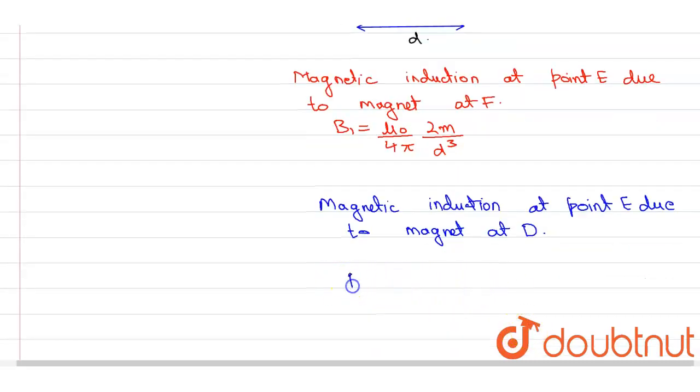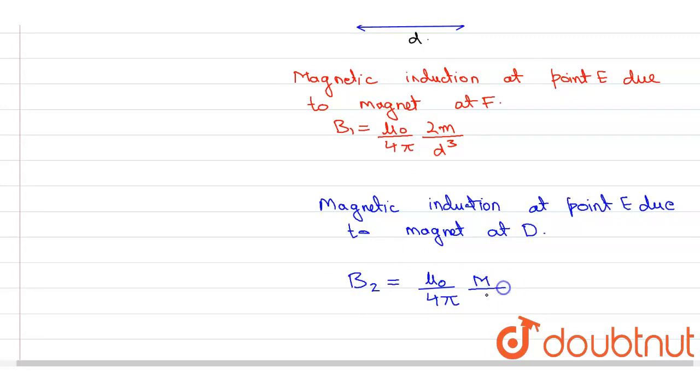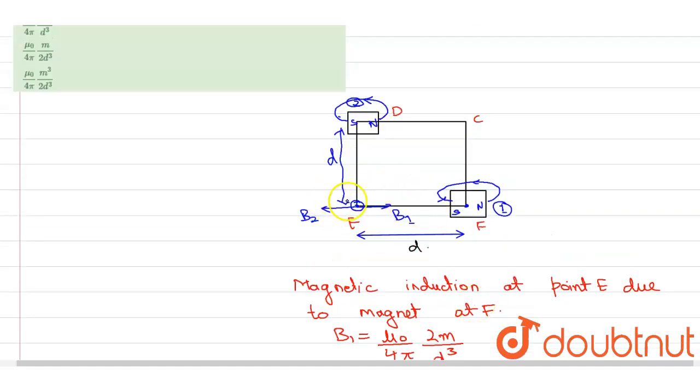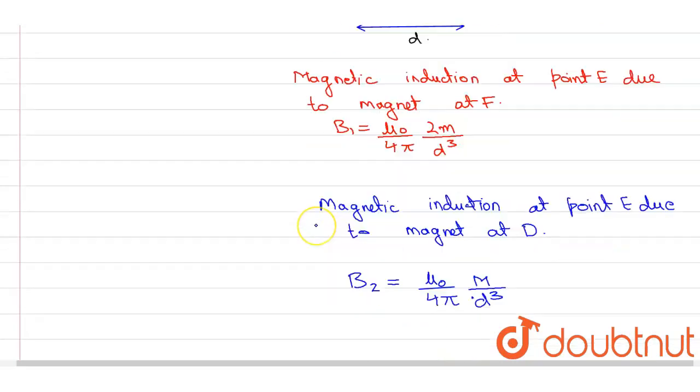So this would be B2 is equal to mu naught divided by 4 pi M divided by D cube. And it acts along line F to E, it is going in this direction.